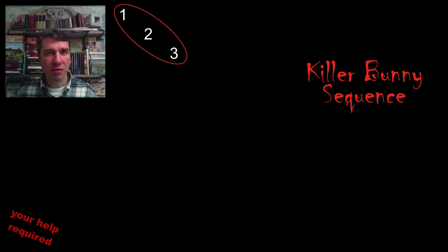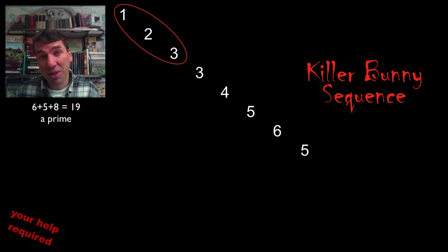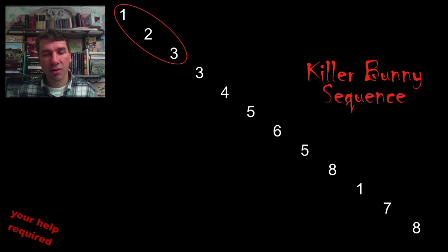A variant of John Conway's killer bunny sequence is to choose any three numbers to begin with, and subsequent turns, you add up the last three numbers, and you divide by the smallest prime factor. So if the number ends up to be prime, well then you end up dividing by itself, and you end up with one. So let's see how this sequence goes forward.